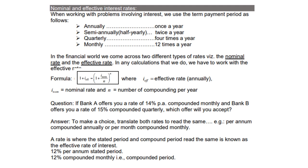In any calculation that we do, we have to work with the effective rate. The formula is: 1 plus I_effective equals 1 plus I_nominal over N, to the power of N. Where I_effective is the rate annually, I_nominal is the nominal rate, and N is the number of compounding periods. Question: if Bank A offers a rate of 40% per annum compounded monthly, and Bank B offers a rate of 50% compounded quarterly, which offer will you accept?